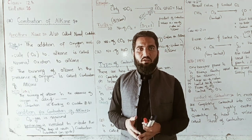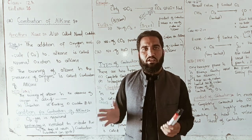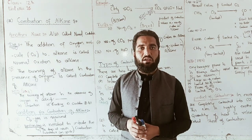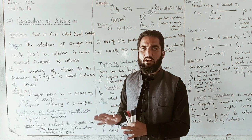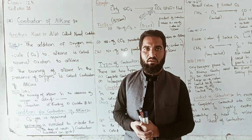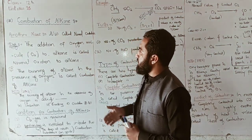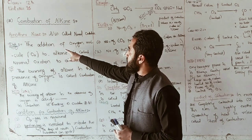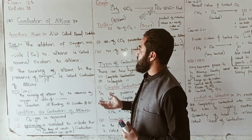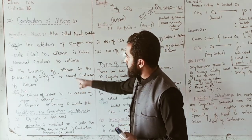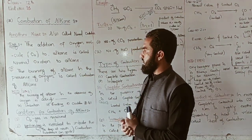Ozonolysis oxidation requires pi electrons. Because alkane doesn't have pi electrons, alkane doesn't undergo ozonolysis oxidation. The burning of alkane in the presence of oxygen is called combustion of alkane.